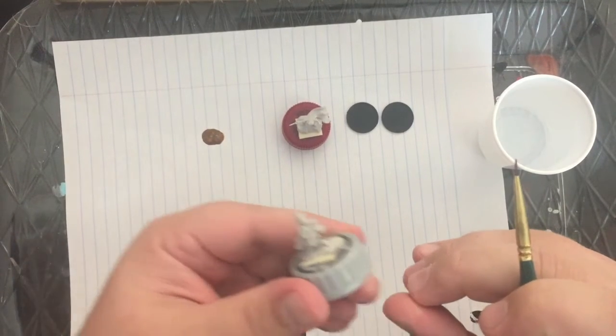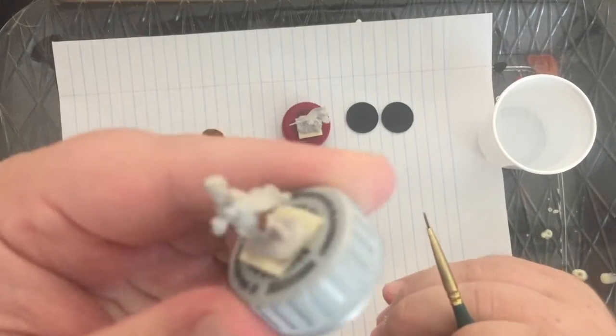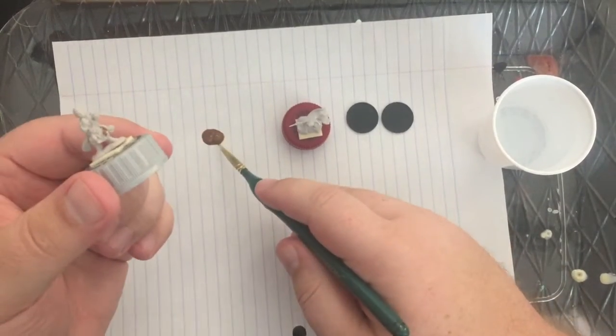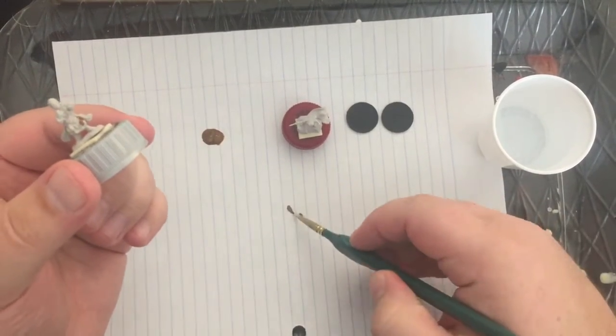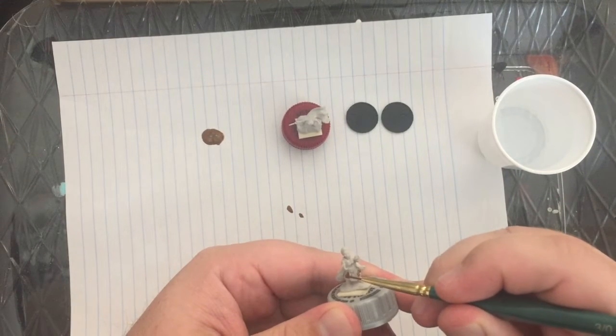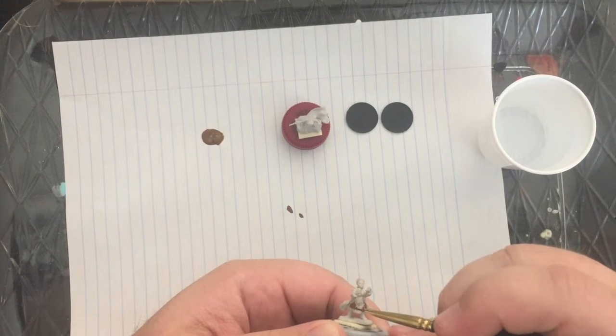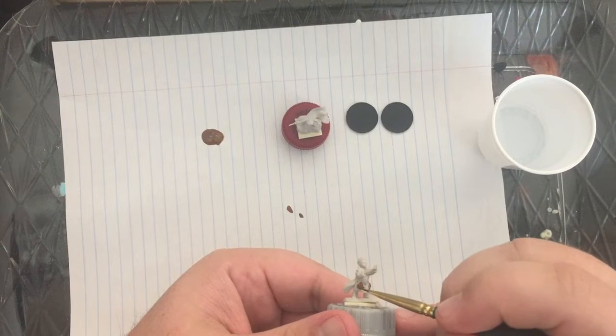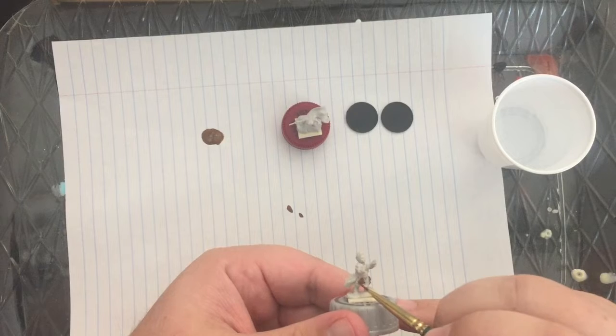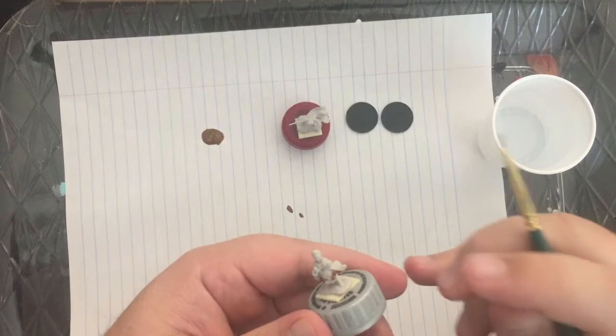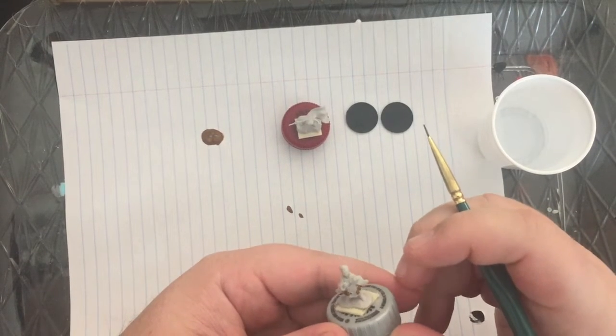We don't want to lose that nice leather brown. Plus painting the smallest area means that if you miss and go outside the area, you can just cover it with the cloth color that comes next.